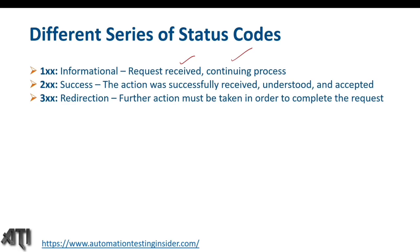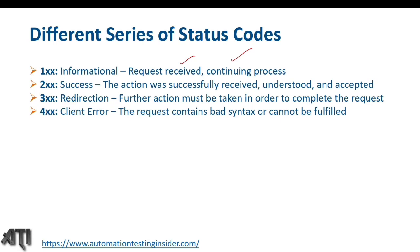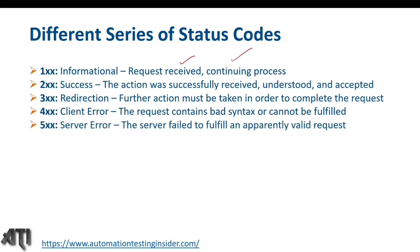The 400 series is client errors — the request contains bad syntax or cannot be fulfilled; these are client-side error response codes. The 500 series is server-side errors — when the server is down or there's a problem at the server end. Even if we're sending the correct request from the client, we won't receive a correct response due to problems at the server end. These are the different types of status codes.